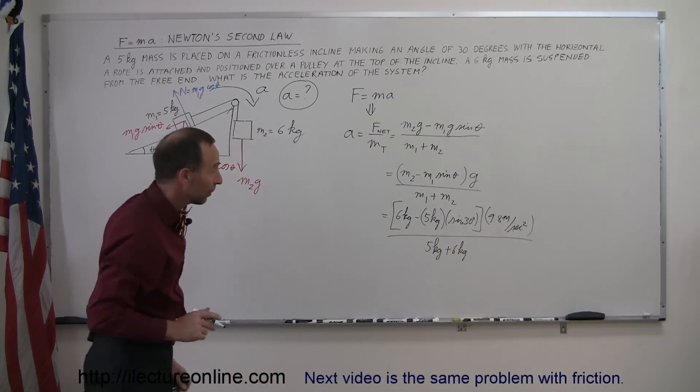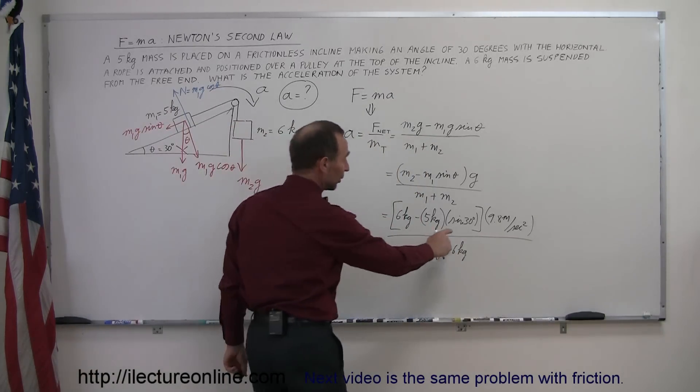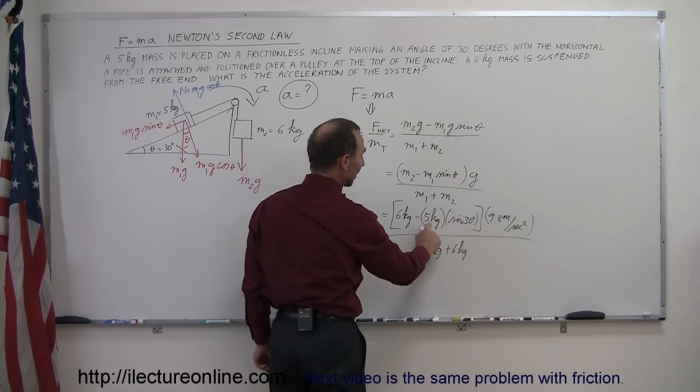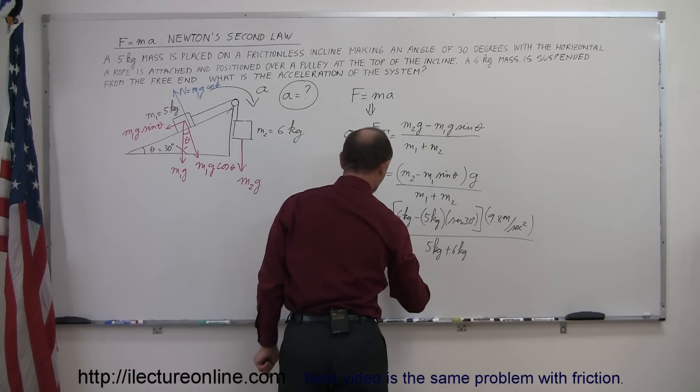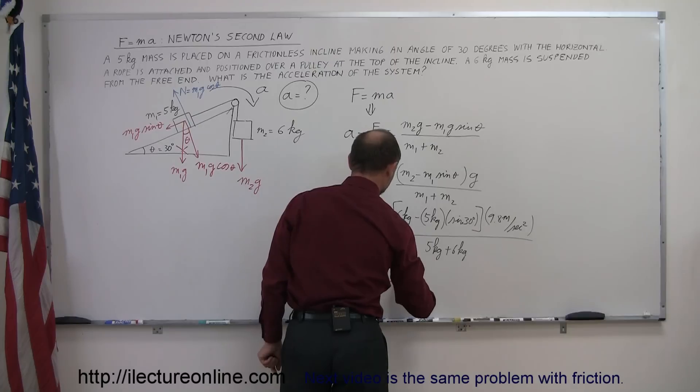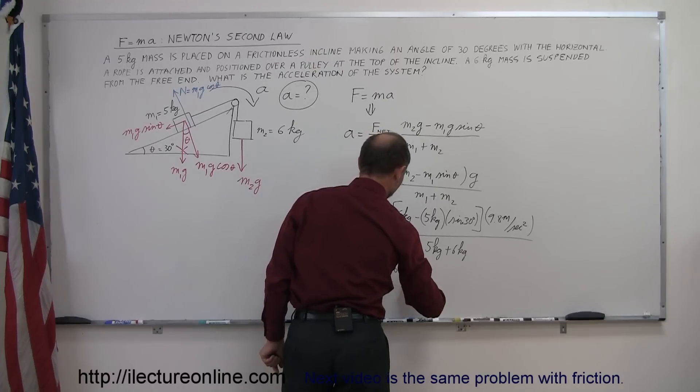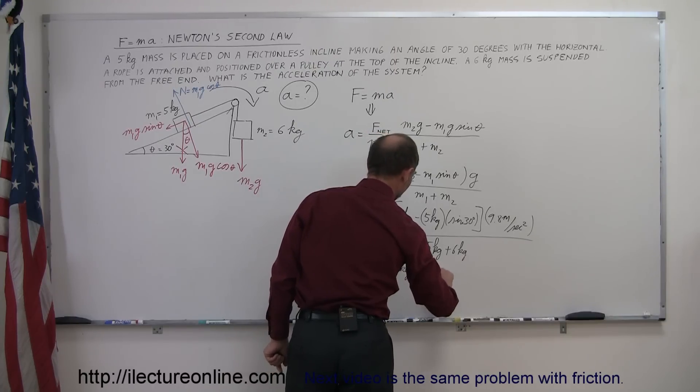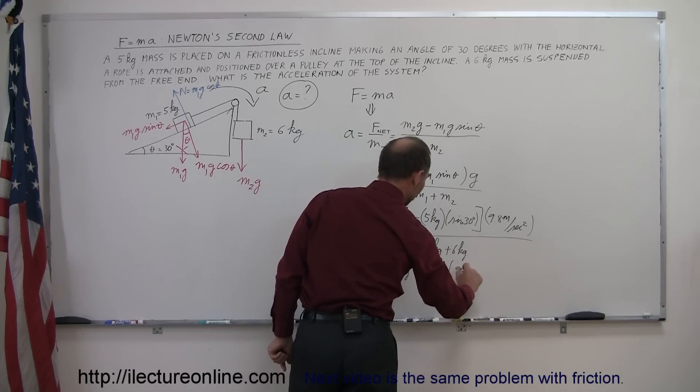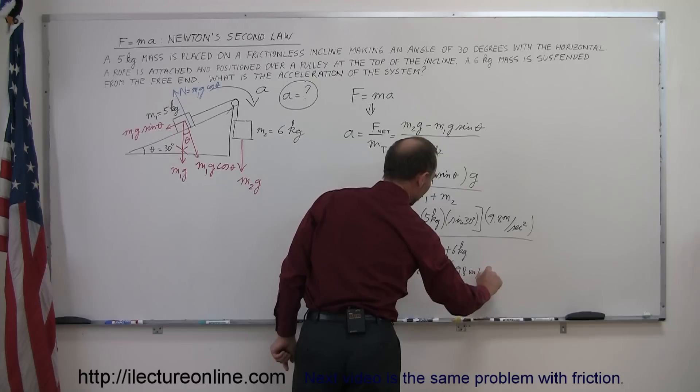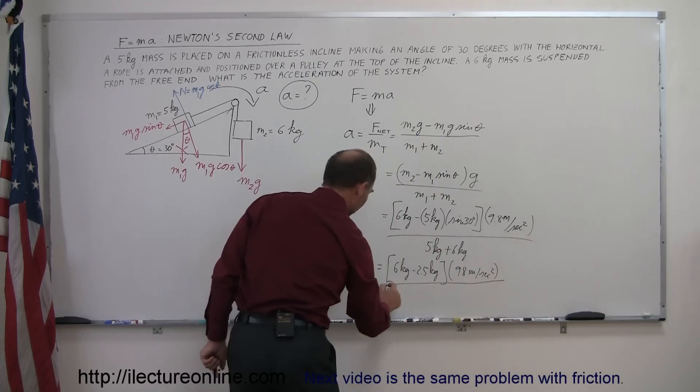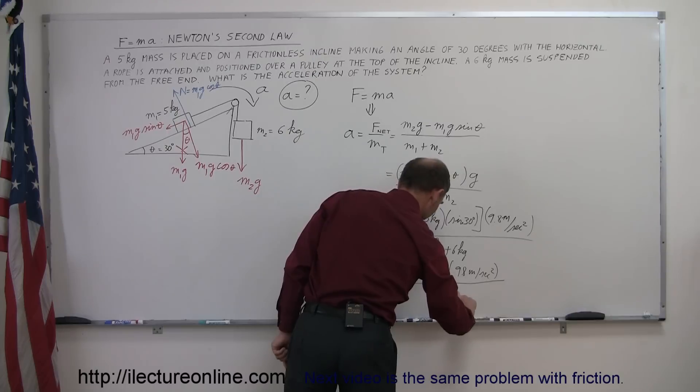Simplifying this a little bit now. The sine of 30 is one half, so this would be one half times five, which is two and a half kilograms. So this is equal to six kilograms minus 2.5 kilograms, the whole thing multiplied times 9.8 meters per second squared, and then divide it by 11 kilograms in the denominator.